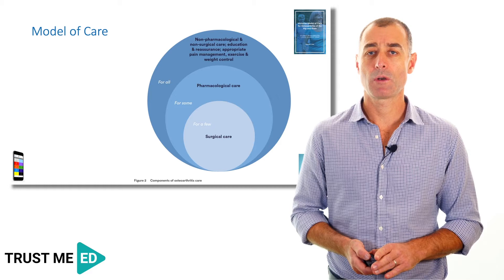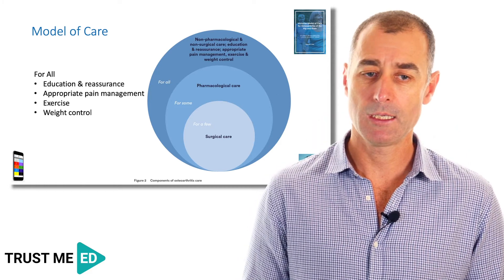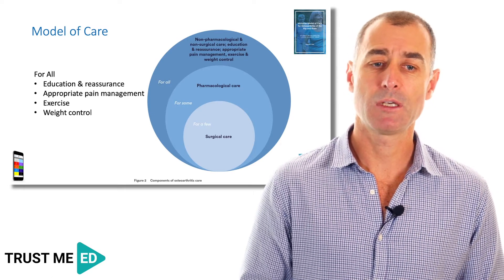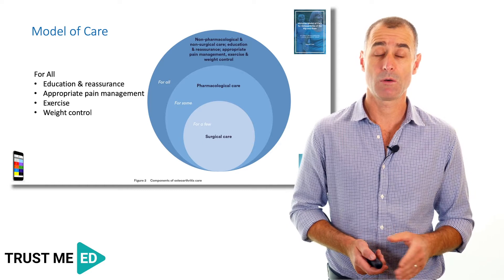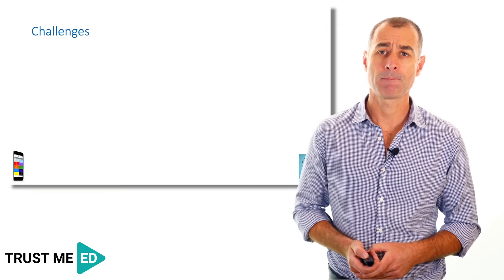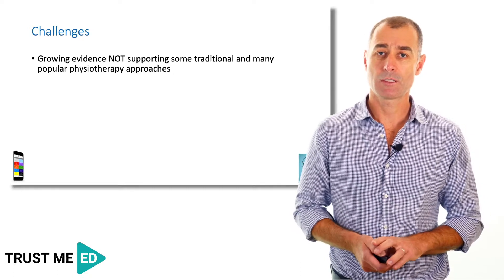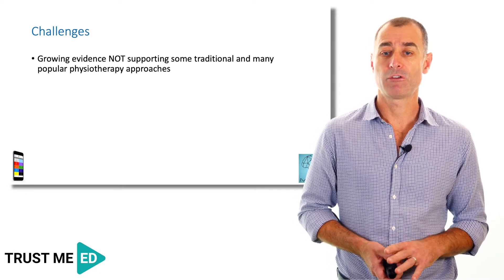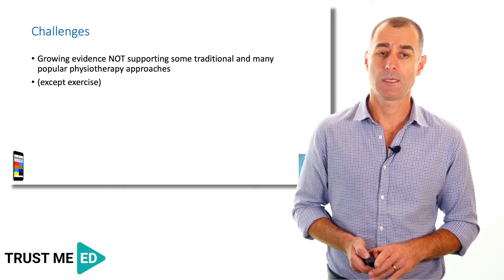For everyone with osteoarthritis of the hip or knee, the model of care recommends education and reassurance, appropriate pain management, exercise, and weight control. As physiotherapists, we're well positioned to assist with all aspects of that first-line care. The challenges broadly across musculoskeletal pain — using arthritis as an example — are that growing evidence does not support a number of traditional and many modern popular physiotherapy approaches, except exercise.